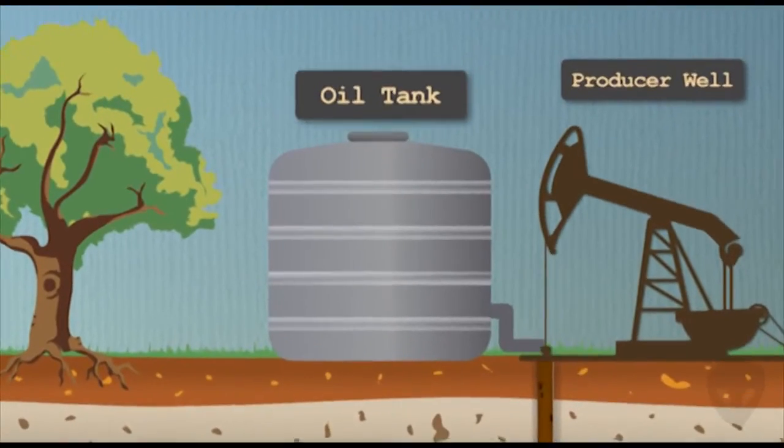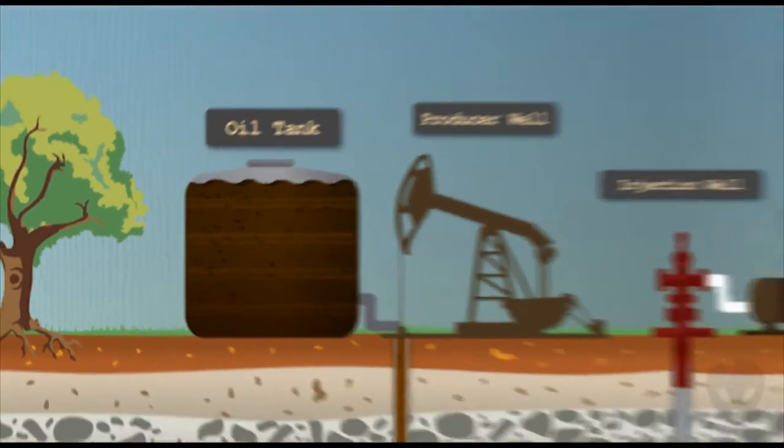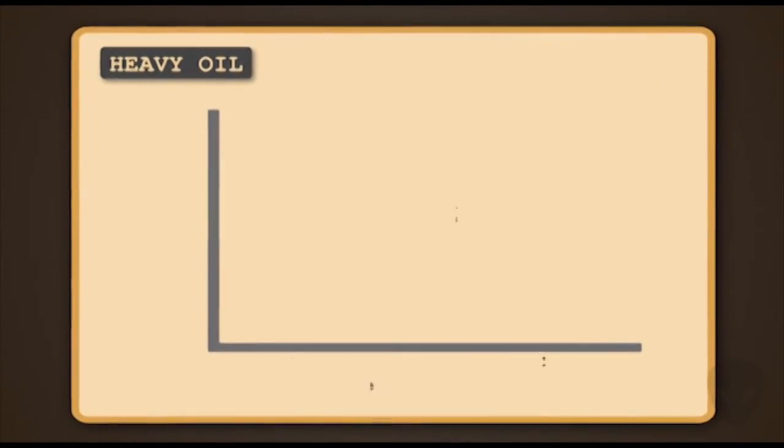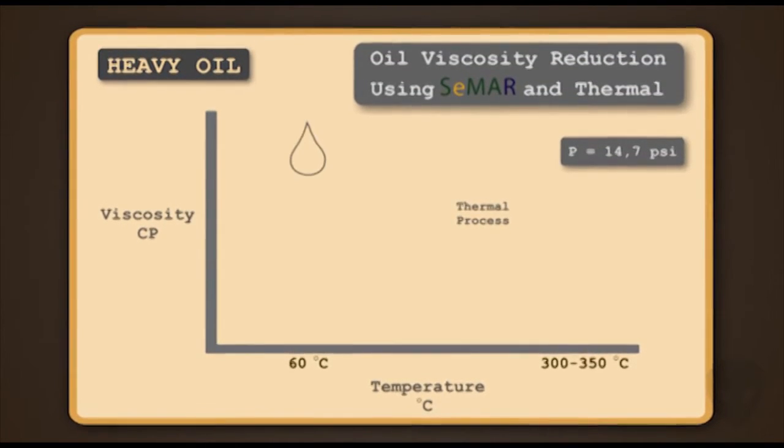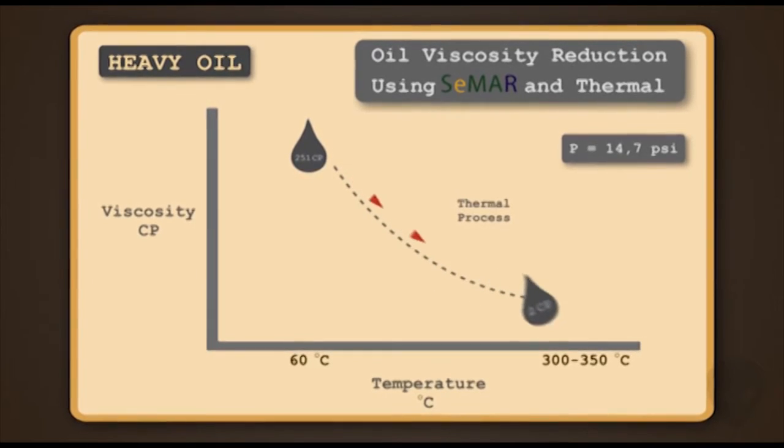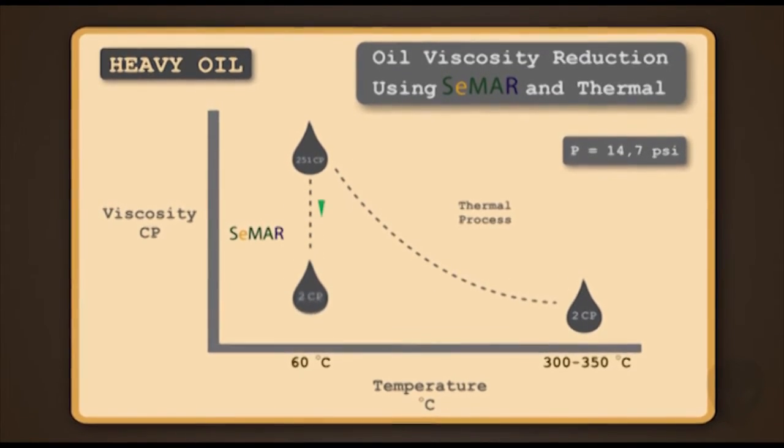Besides forming viscoblock, SMAR can reduce oil viscosity if you're dealing with heavy oil. In the test, oil viscosity is measured using viscometer at 60 degrees Celsius. The result showed a reduced viscosity of heavy oil from 251 CP to 2 CP. This test proved that the oil viscosity reduced by SMAR will have similar results with thermal injection up to 200 to 250 degrees Celsius.